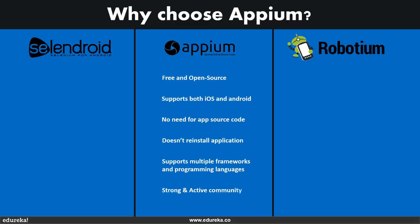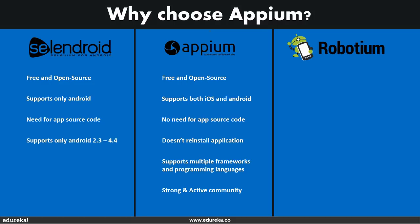Selendroid is Selenium for Android, also free and open source. Unfortunately, as the name suggests, Selendroid can only be used for testing Android apps. It also needs the app source code or library used for development. A significant limitation is that it only supports Android 2.3 to Android 4.4, while we are currently at Android 8 or 9. Selendroid is compatible with Selenium and Jenkins, which is great, and it has a community, but not as strong as Appium's.